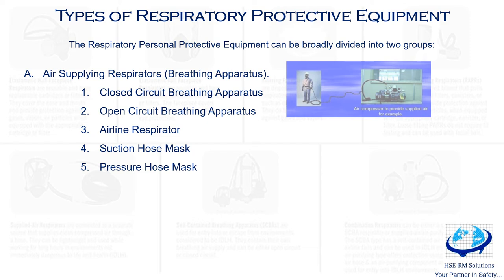The pressure hose mask is similar to the suction hose mask, except the air is forced through the large-diameter hose by a hand-operated or motor-operated blower. The blower must be operated continuously while the mask is in use.